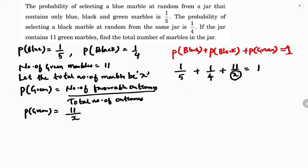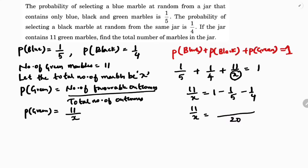So 11/x equals 1 minus 1/5 minus 1/4. Transposing those values, we get 11/x equals 11/20. Multiplying: LCM of 5 and 4 is 20, so 20 minus 4 minus 5 equals 11, giving 11/x equals 11/20.